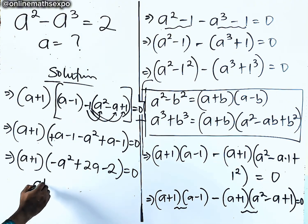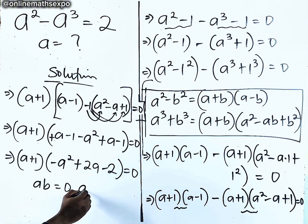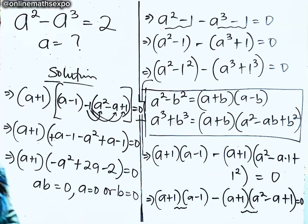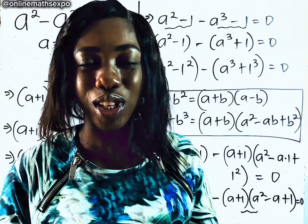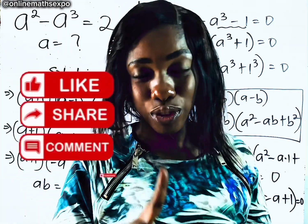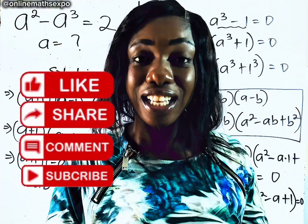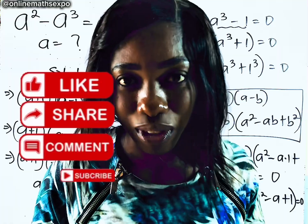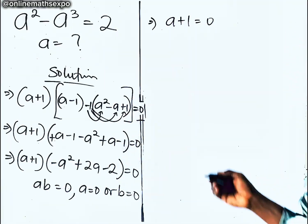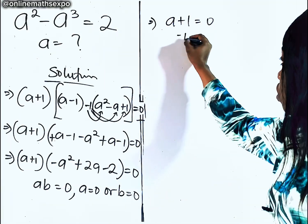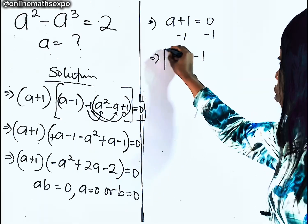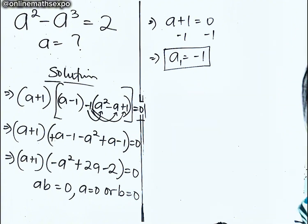Remember, for every AB equal to 0, either A is 0 or B is equal to 0. So if you apply it here: A plus 1 is equal to 0. To get A, subtract 1 from both sides — we have A is equal to negative 1. So this gives us the first value of A.